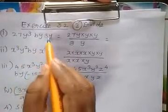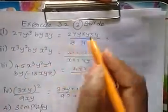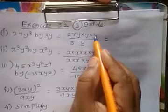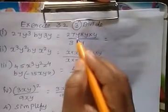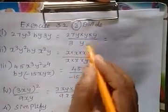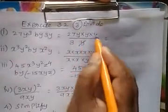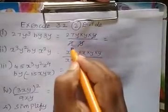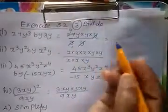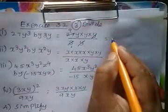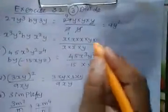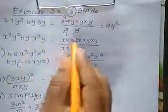27y cubed divided by 3y. So 27y cubed — split y cubed as y into y into y. So 1y, 1y cancel. 1 times 3 is 3, 9 threes are 27. So the answer is 9y squared.